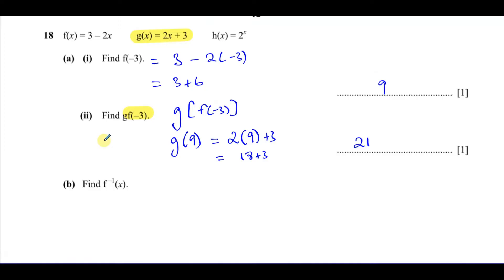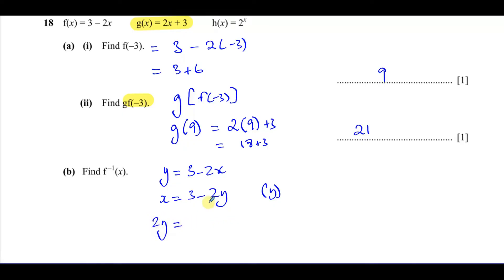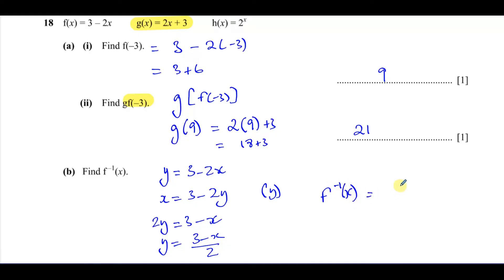For part (b) it says find the inverse of function f. Function f is 3 minus 2x. I write it as y = 3 - 2x. When finding the inverse of a function, we switch x and y around. Then we make y the subject. I add 2y to both sides and subtract x from both sides, so that the y term has a positive coefficient. That leaves y = (3 - x) / 2. So the inverse function f⁻¹(x) = (3 - x) / 2.